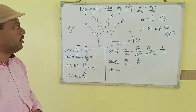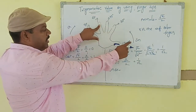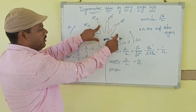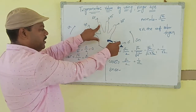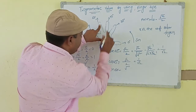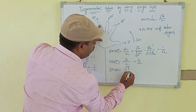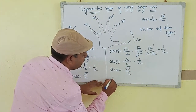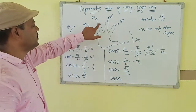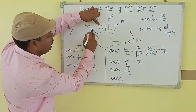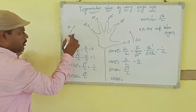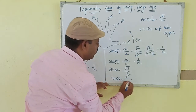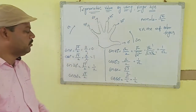Now sine 60 degrees. In the sine direction, how many fingers are below 60 degrees? One, two, three — three fingers. So sin 60° = √(3)/2. Same way, cos 60°: in the cosine direction, how many fingers? Only one finger. So cos 60° = √(1)/2 = 1/2.